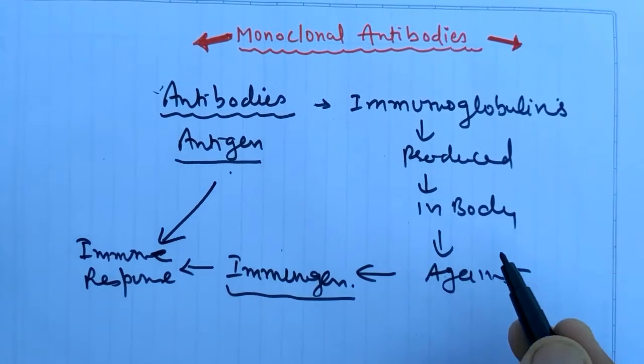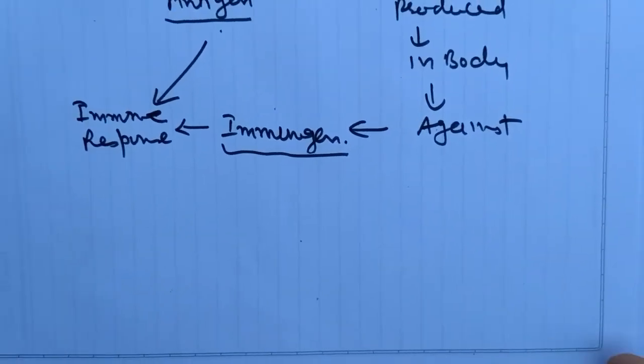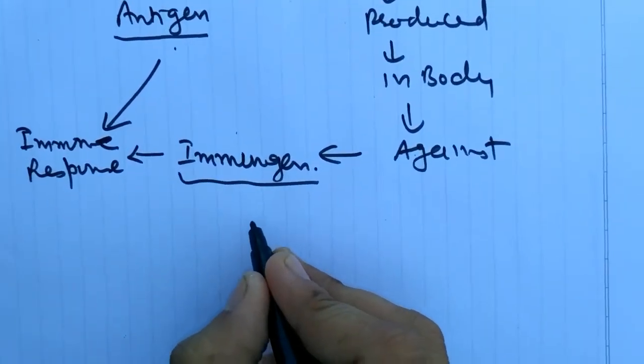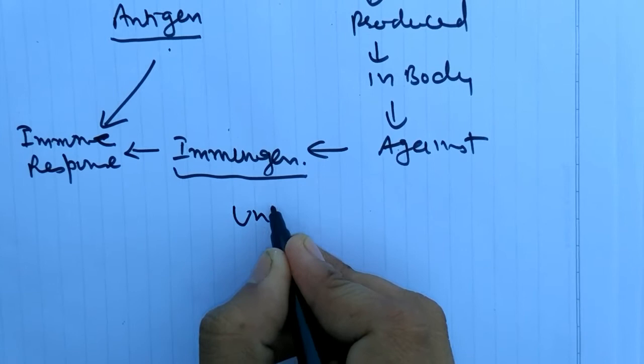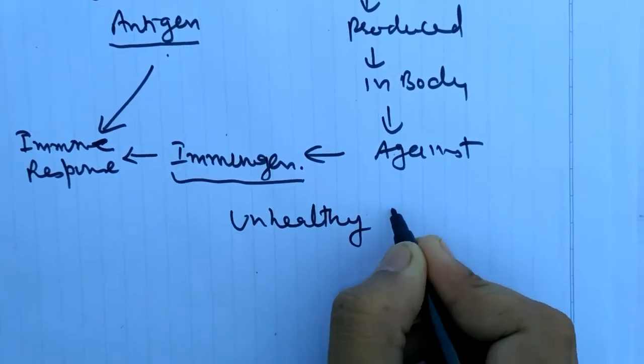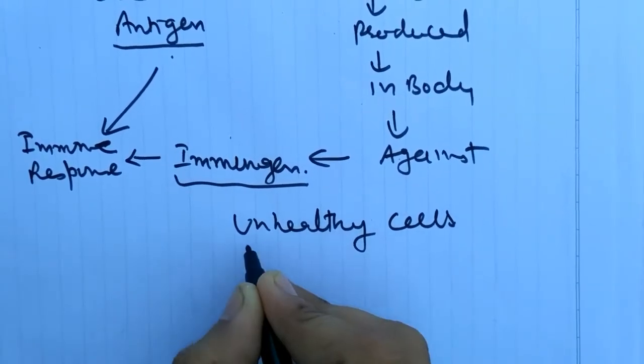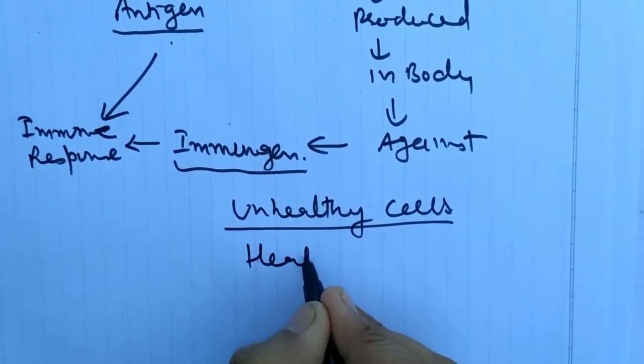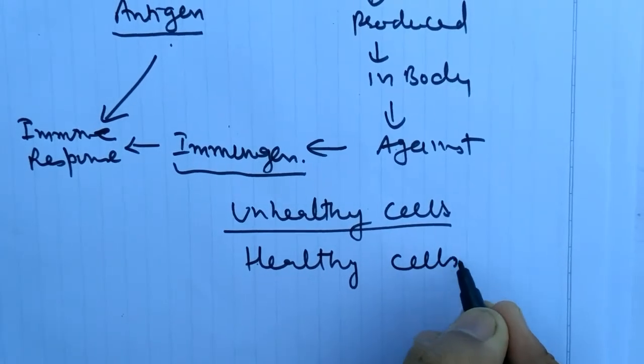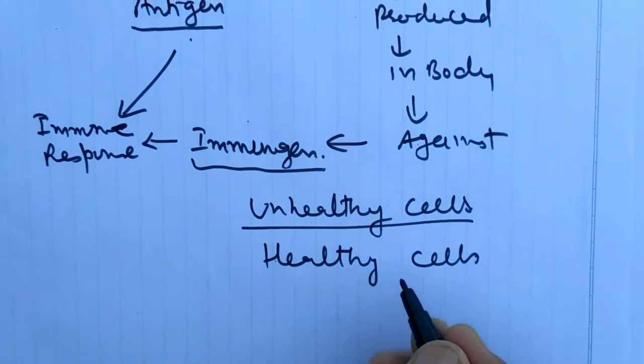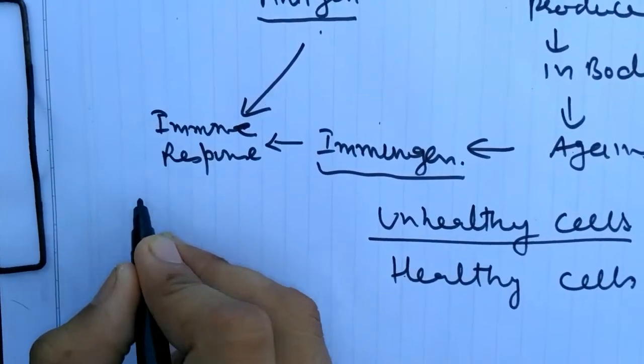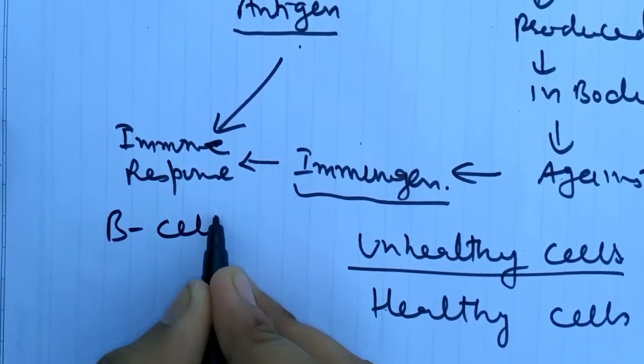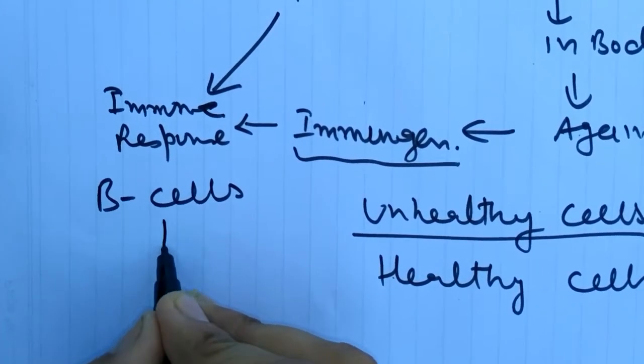In the monoclonal antibody technique, we take advantage of unhealthy cells. There is a lot of difference between unhealthy and healthy cells of our body. For example, if we discuss the B cells, B cells differentiate into the plasma B cells.